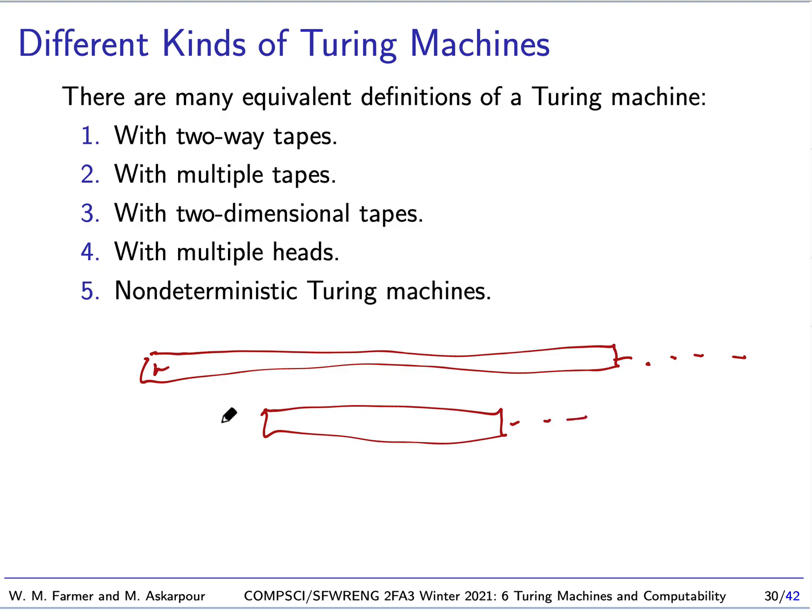That's what's called a two-way tape. We can have a Turing machine with multiple tapes. We can have a Turing machine with a two-dimensional tape. One kind of two-dimensional tape would be an infinite array like this where we can write various spots in our infinite array.